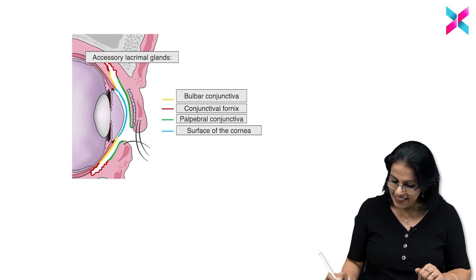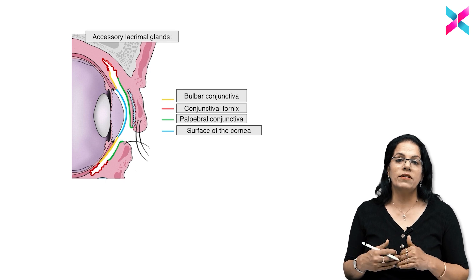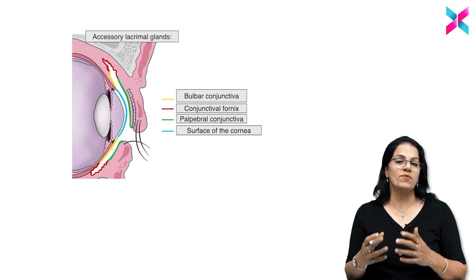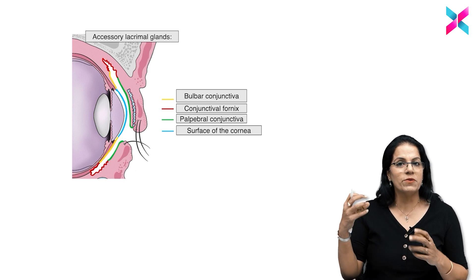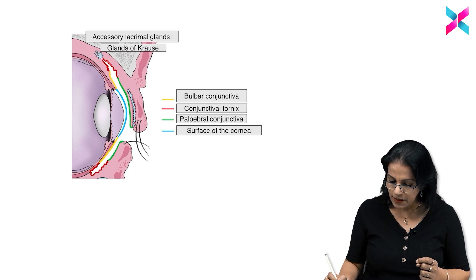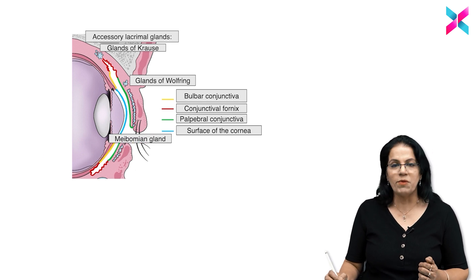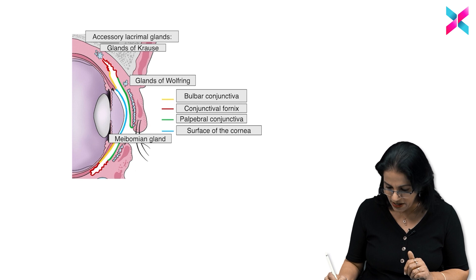Then we talk about the in the fornix what we have are accessory lacrimal glands. The main lacrimal gland everybody knows is on the outer upper quadrant. In the fornix area we have accessory lacrimal glands, what are the names? Glands of Krause, glands of Wolfring, and in the lids of course there is meibomian gland.